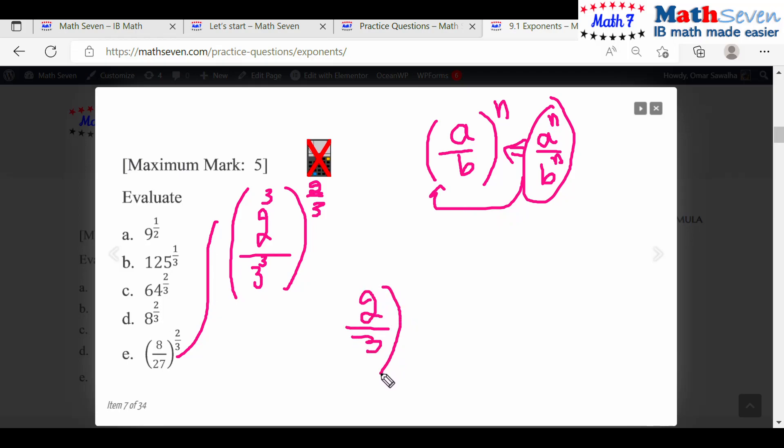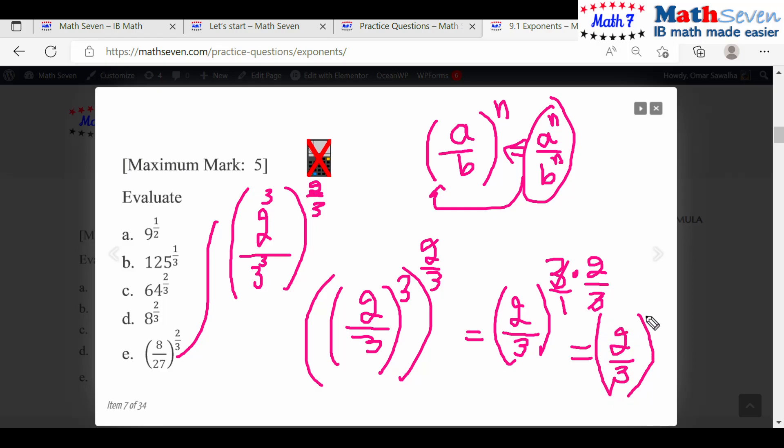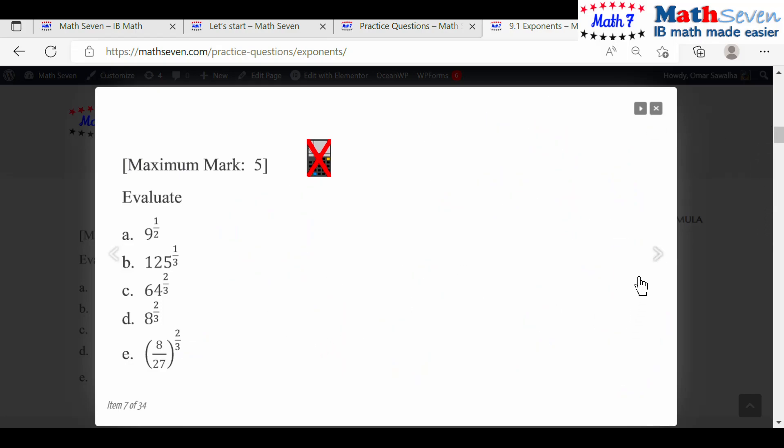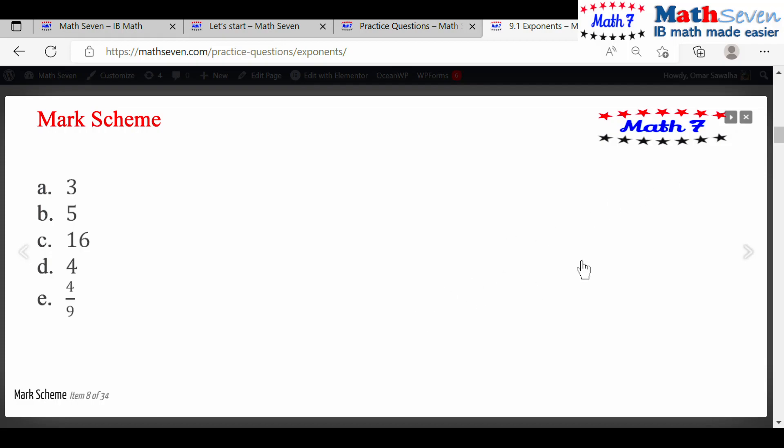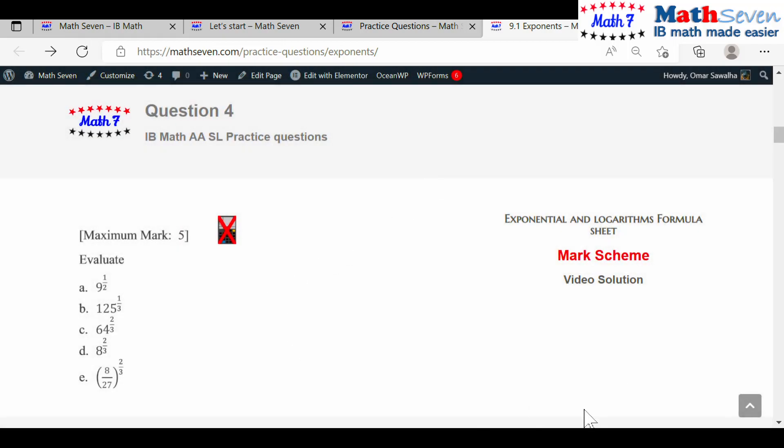So this will become 2 over 3 power of a power, we multiply. 3 and 3 cancelled. So this will become 2 over 3 squared. What's 2 over 3 squared? So it's 4 over 9, done. Check the mark scheme. 4 over 9, you're good to go. Okay, is that good? Stop.